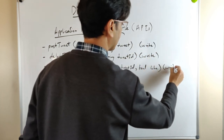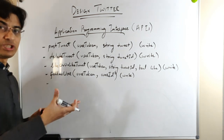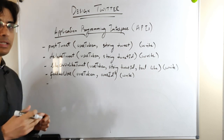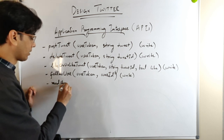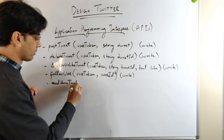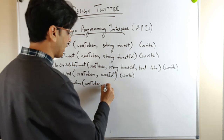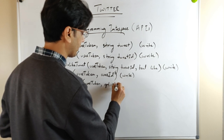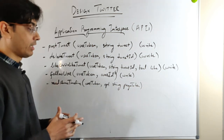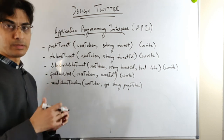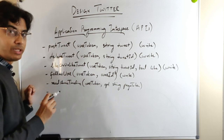Now let's see the read operations. The next API is read home timeline, which takes a user token and an optional page token as input. The page token is the position of the page; if not provided, we return the home timeline starting from the beginning. We also have a read user timeline API, which takes a user token and an optional page token.